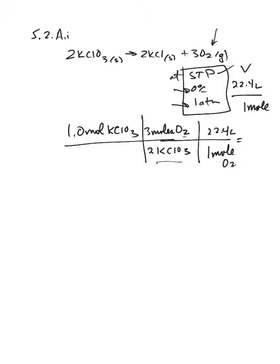So I have 1 mole times 3 moles divided by 2 moles, times 22.4 liters, I get an answer of 33.6 liters, and that on your multiple choice question is answer C.